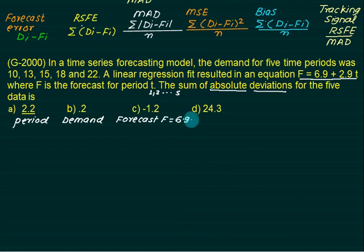We have to calculate F equals 6.9 plus 2.9 times t. Forecast error is given by demand minus forecast. We'll make one column for absolute value. We have five periods: 1, 2, 3, 4, 5. The respective demands are 10, 13, 15, 18, and 22.